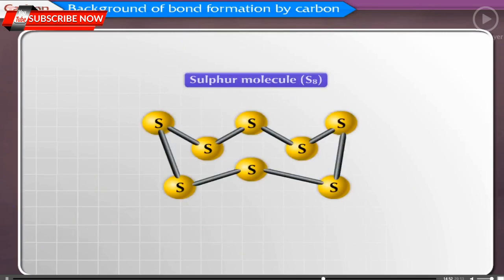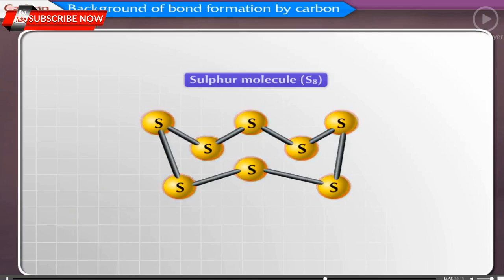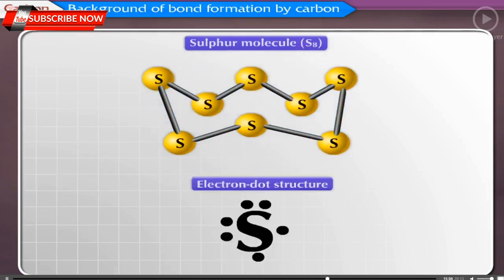The molecular formula of sulfur is S₈. In this, eight sulfur atoms are joined to each other forming a ring, and electrons in the sulfur molecule are represented by dots.